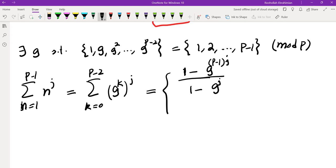But that only is valid if P does not divide 1 - G^j. If it does divide 1 - G^j, then that means all of the (G^k)^j's are 1, so that gives us P-1.